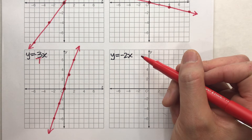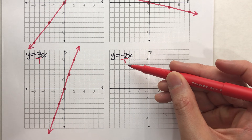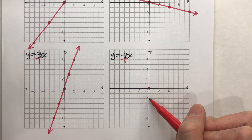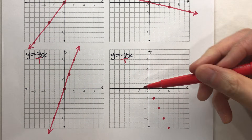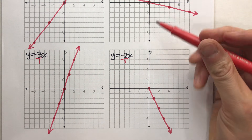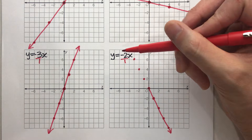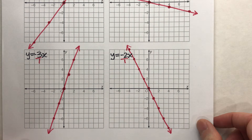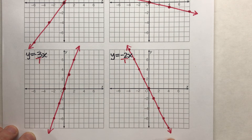Here's another one — y equals negative 2x. Again, turn our slope into a fraction: put it over 1. This tells me I'm going to go down 2, right 1 between points. Starting at (0, 0), I go down 2, right 1 and plot a point. Repeat — down 2, right 1 — plot a point. Down 2, right 1. Down 2, right 1. There is half my graph. To do the other half, I repeat it backwards: up 2 and back 1. Up 2 and back 1. So it looks a little bit like this.